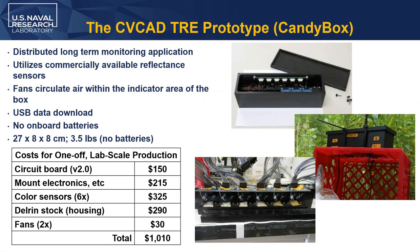Our goal is to have quite a few more indicators. Using the standard approach of an array with differential responses across elements, the more elements we include the better. For algorithm development and first demonstrations we used an array of six. My colleague Jeff Erickson designed this package with six commercial color sensors on a custom board. For one-offs, these are about $1,000 — about ten times what we ultimately want to charge per device, but it's a good place to start.